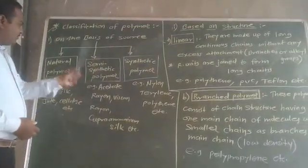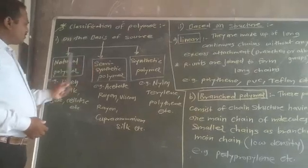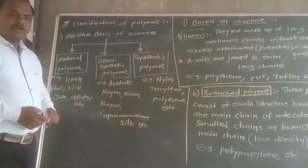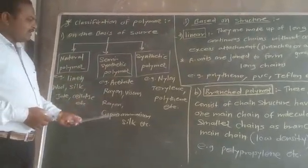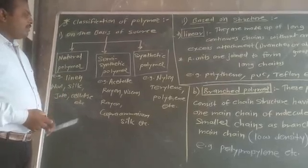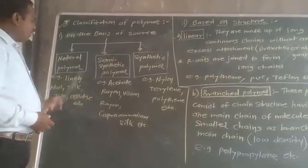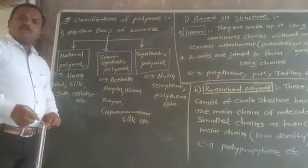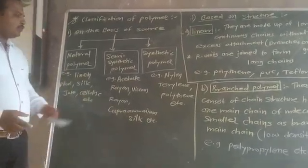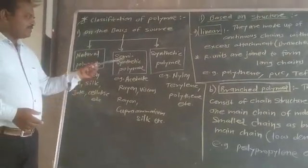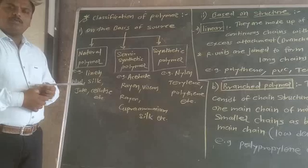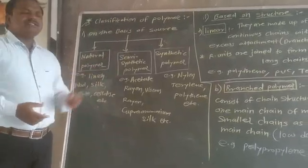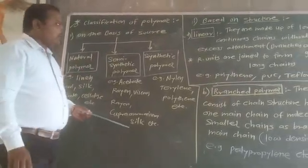All these types are based on source: natural polymer, semi-synthetic polymer, and synthetic polymer. It is a very simple classification. We must remember the examples of natural, semi-synthetic, and synthetic polymers, as exam questions may ask which polymer belongs to which category.